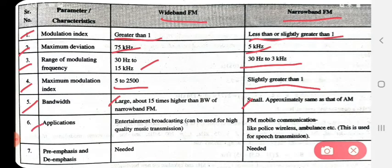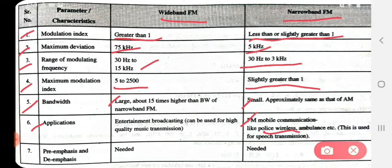Sixth parameter — applications: wideband FM is used for entertainment broadcasting and high quality music transmission. Narrowband FM is used for FM mobile communication, such as police wireless, ambulance, etc. — it is used for speech transmission.